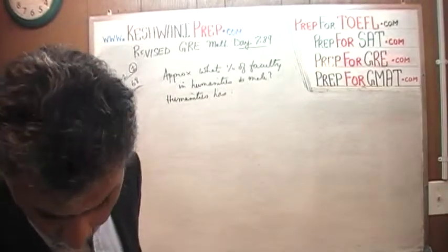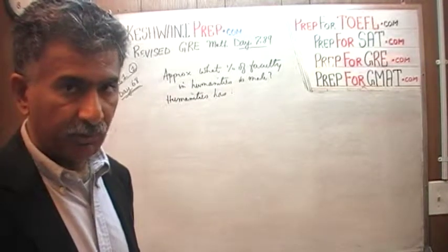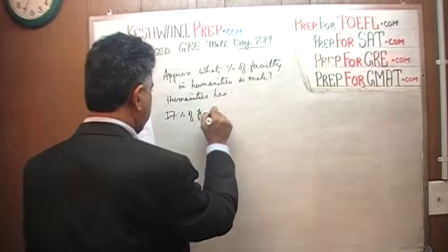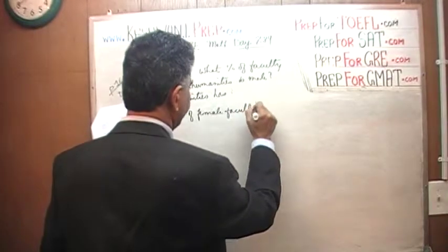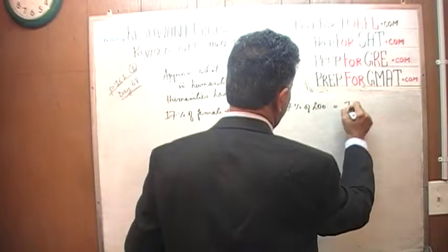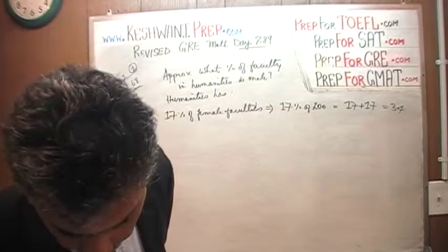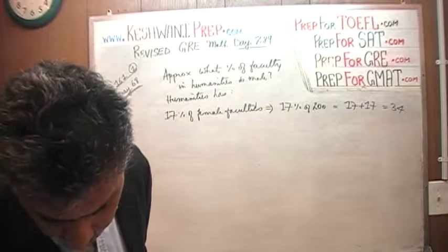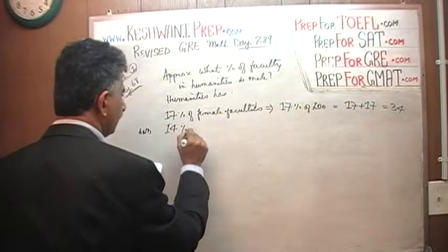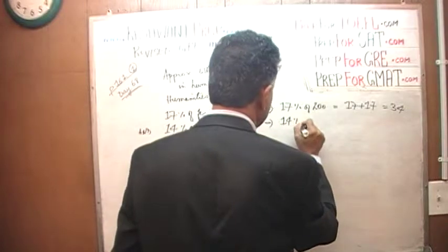Under Humanities in the chart, 17% of all female faculty employed by the university are working in Humanities. That means 17% of 200, which is 17 plus 17, which is 34. For male faculty, looking at the chart under Humanities, I see 14% of male faculty, so we need 14% of 250.